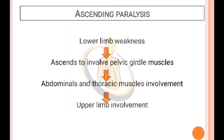Ascending Paralysis — involvement chronology: First, lower limb weakness, then ascends to involve pelvic girdle muscles, then abdominal and thoracic muscle involvement, followed by upper limb involvement.